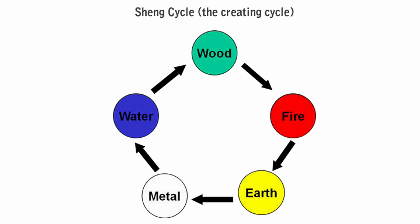The cyclic sequence of generation is as follows: wood generates fire, fire generates earth, earth generates metal, metal generates water, and water generates wood. There are two aspects to the relationship of generation for each element: those of being generated and of generating. The generating element is the mother of the generated element, and the generated element is the child of the generating element. Hence the generation relationship is also known as the mother-child relationship.